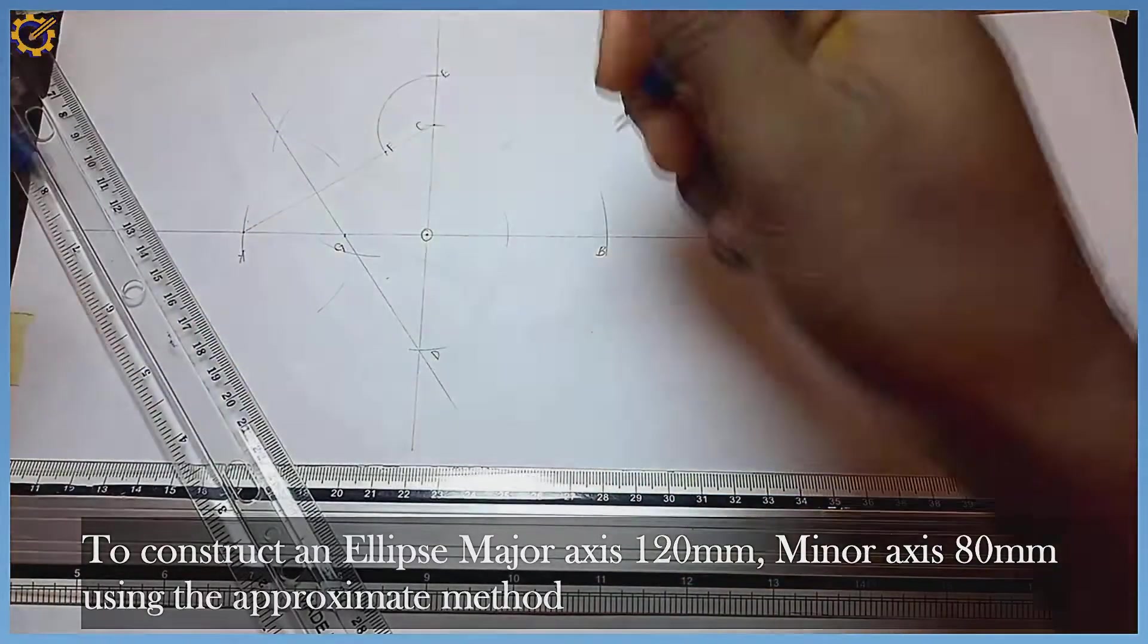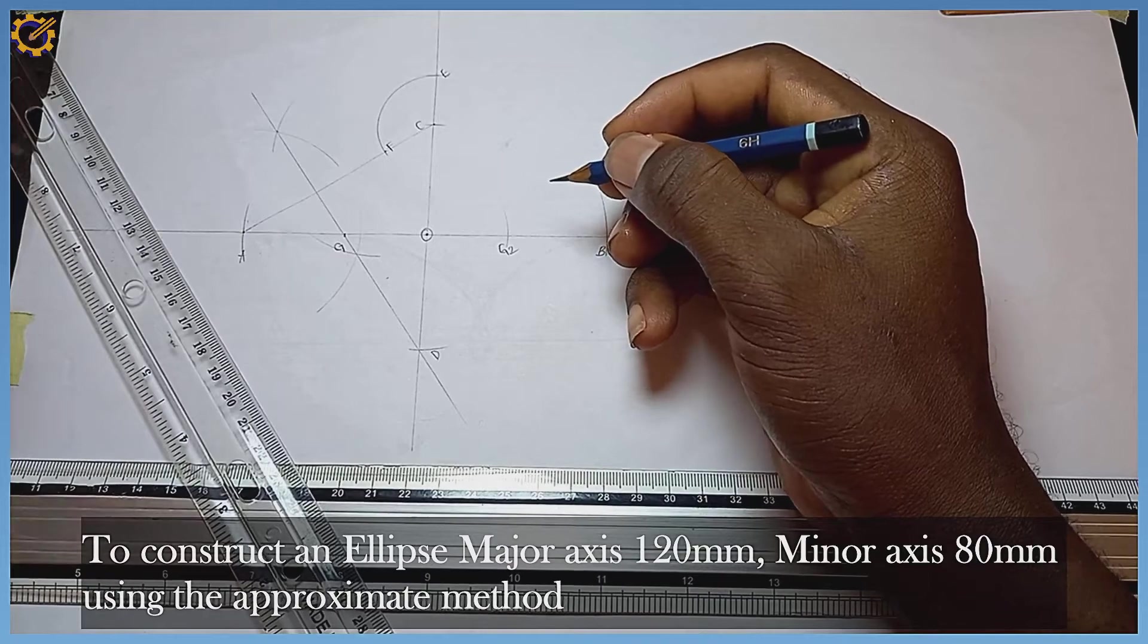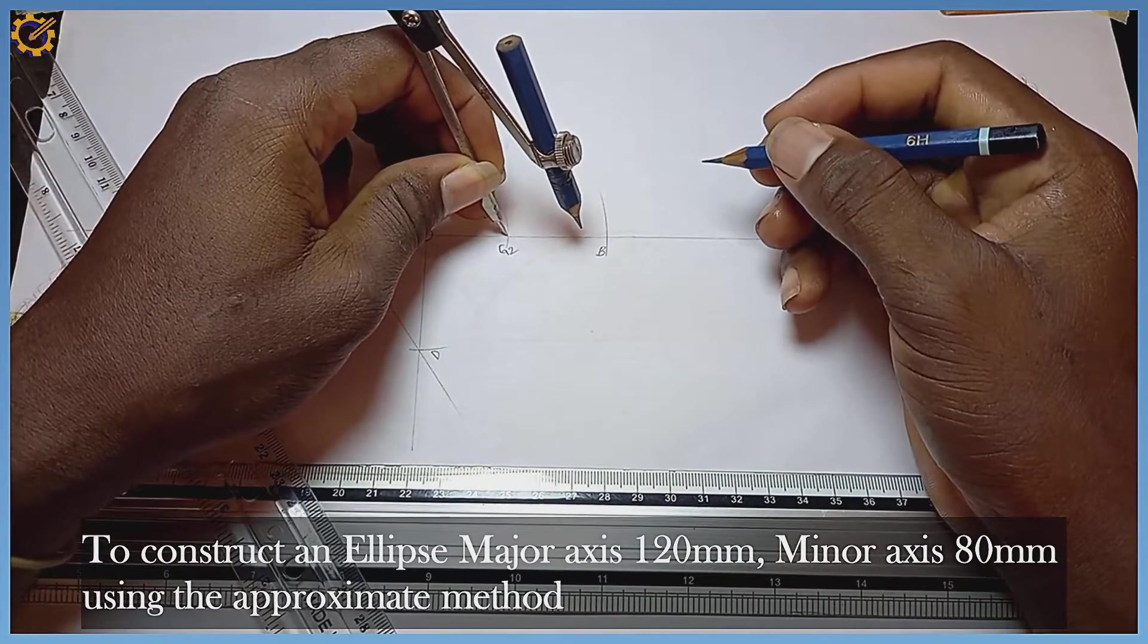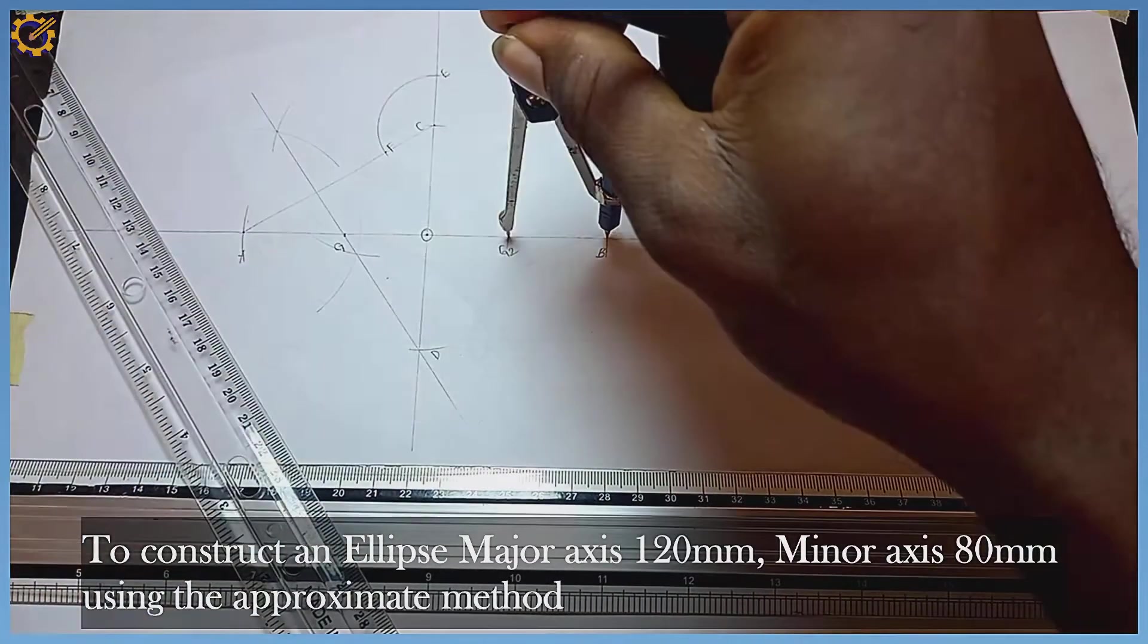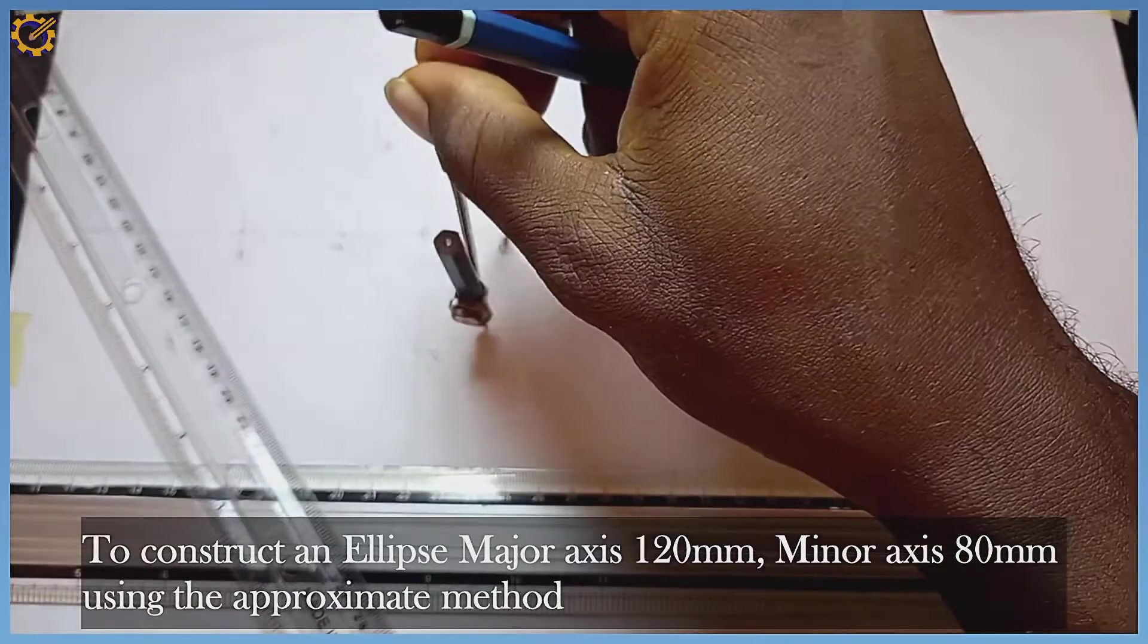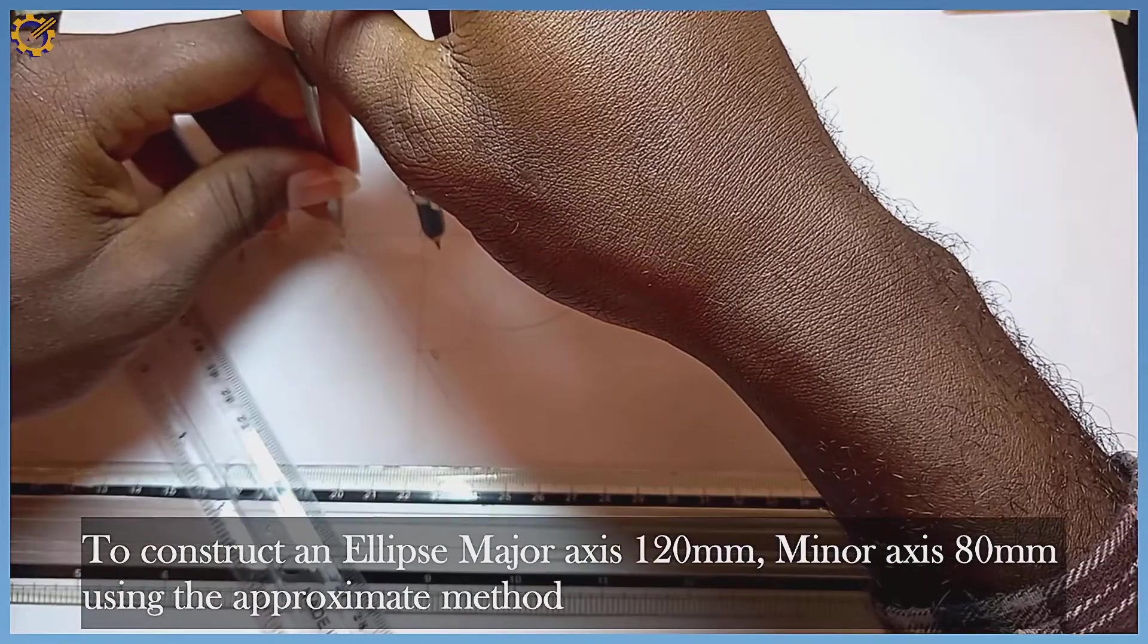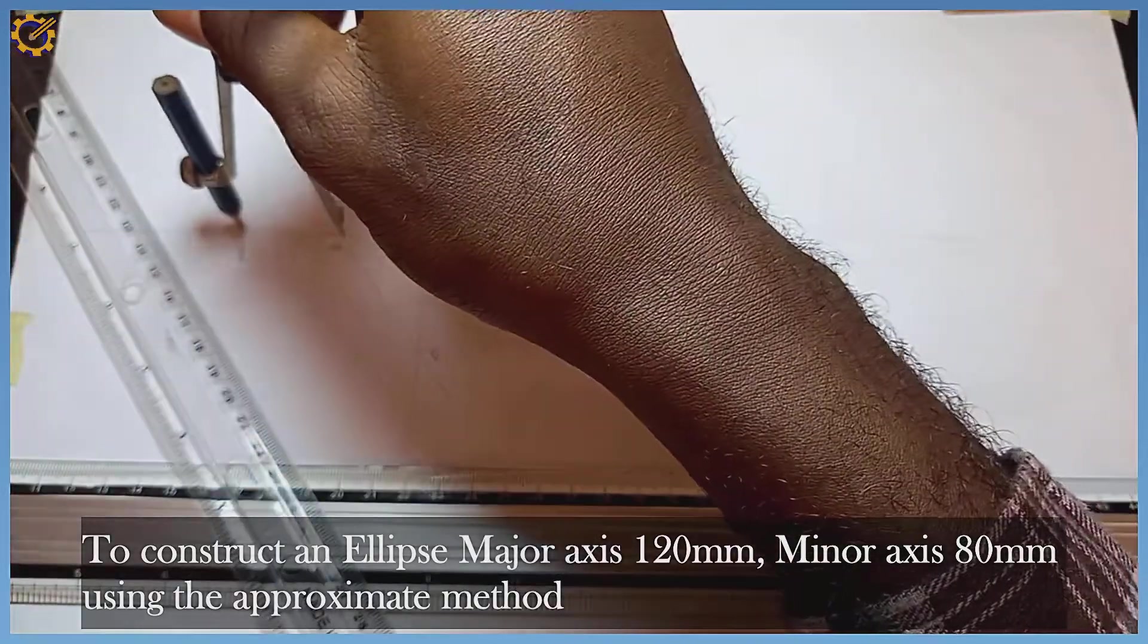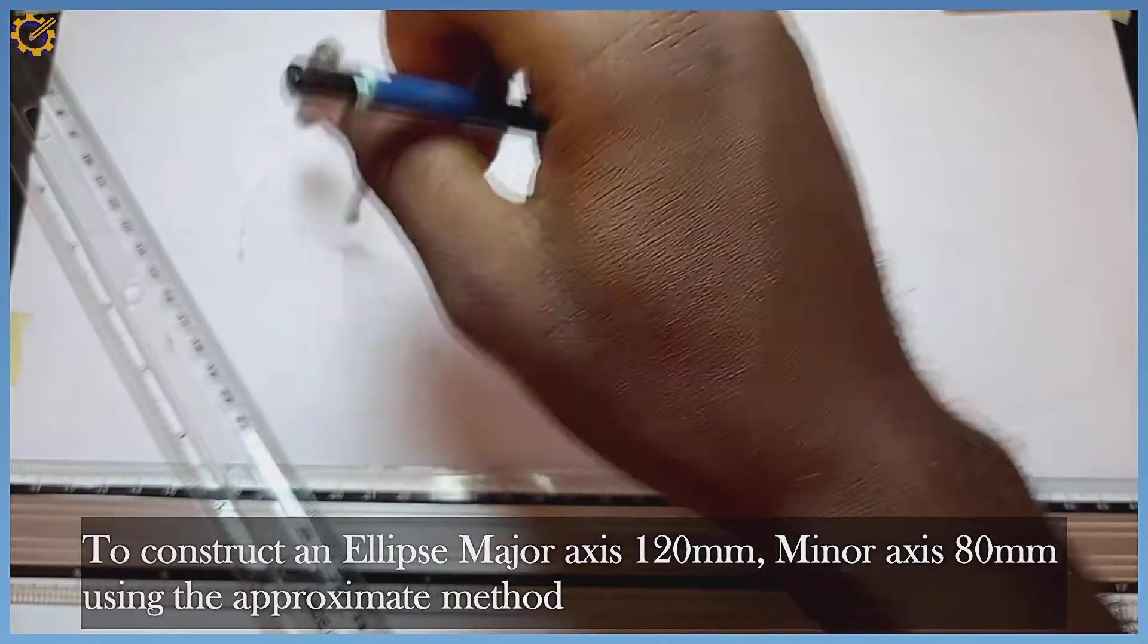Standing on G2 with my compass right here, I draw this arc faintly first. Coming to G1, likewise also to A, I draw it faintly in this order.